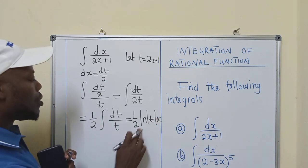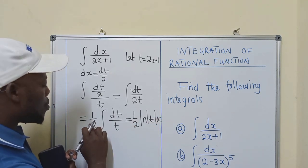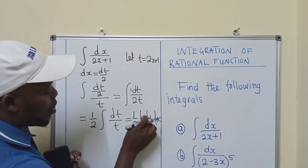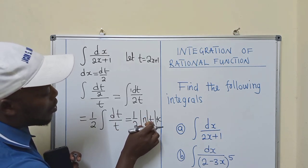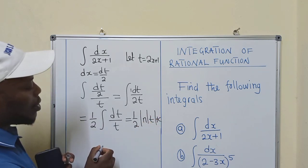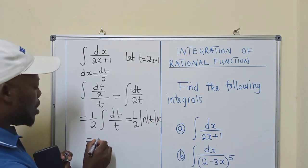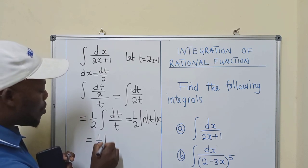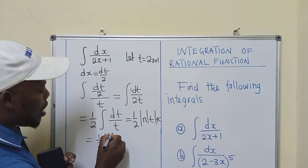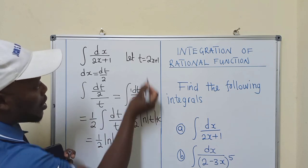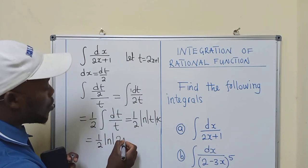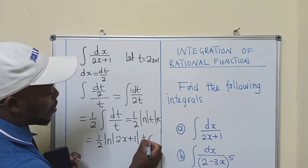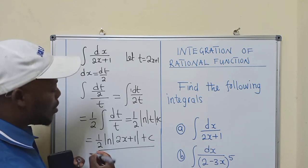And after that, you now say 1 over 2. The integral of this would just be natural log of t plus c. So this is 1 over 2. The integral of this is natural log of t plus c. Which is equal to 1 over 2 ln. And then what is t here? The t is 2x plus 1 plus c. And this is our answer.